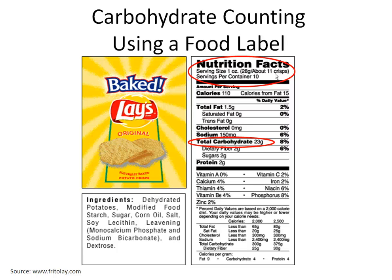Once you have weighed one ounce of crisps, you can look further down on the food label to find the total grams of carbohydrate. One ounce of crisps equals 23 grams of carbohydrate. This bag of crisps contains 10 servings. So if you eat more than one serving, you are eating more than 23 grams of carbohydrate.